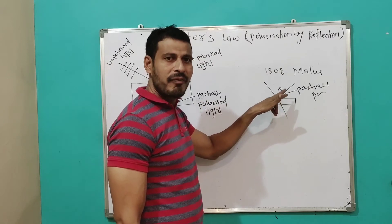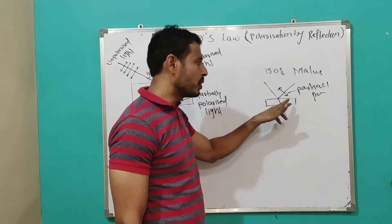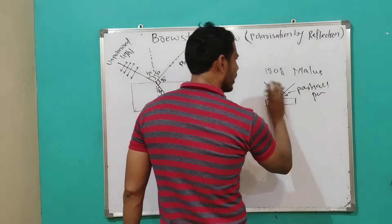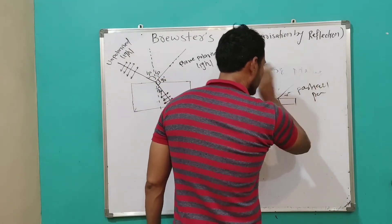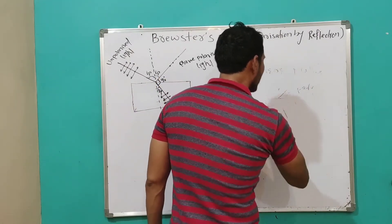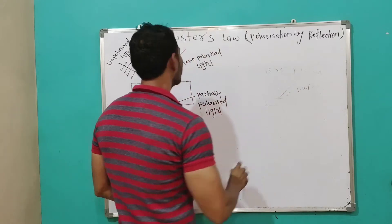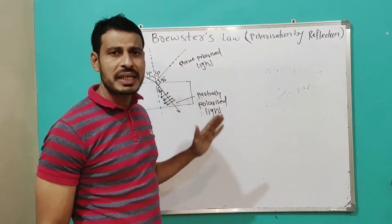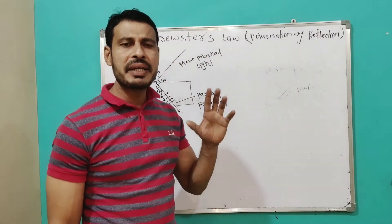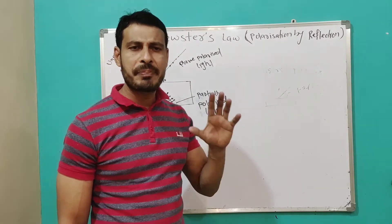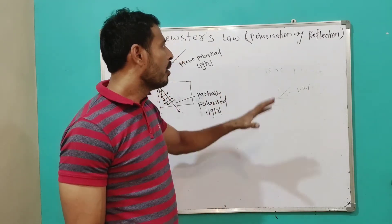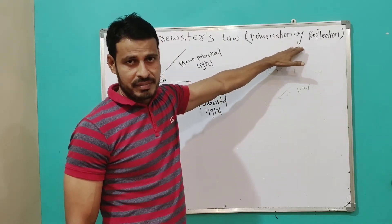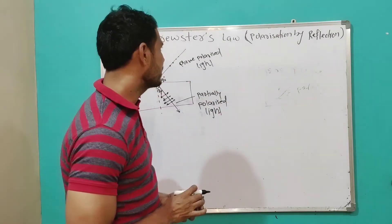Now this is about Malus. Brewster performed a series of experiments on the polarization of light by reflection.